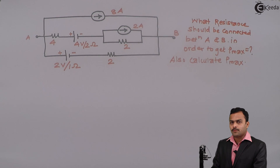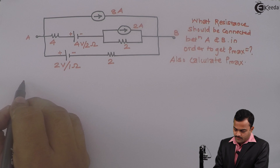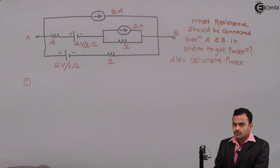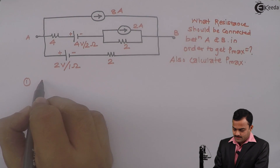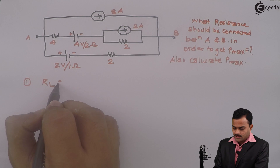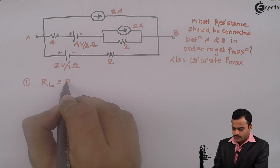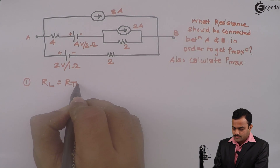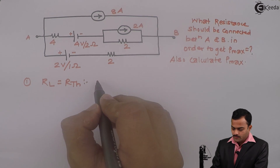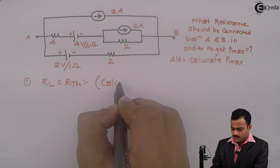Let us solve the problem. First step: I know the condition — the load resistance, the resistance that should be connected between A and B points, should be equal to RTH. So step number 1 is calculation of RTH.